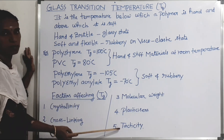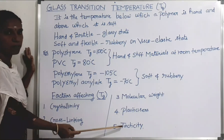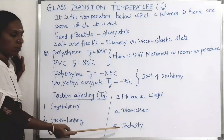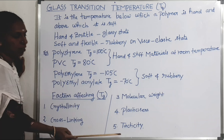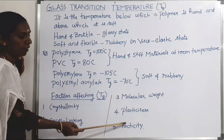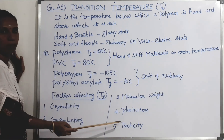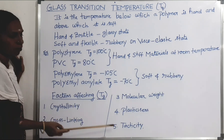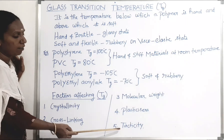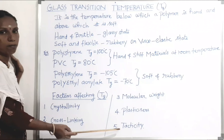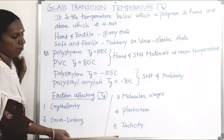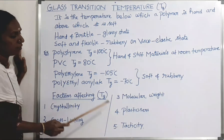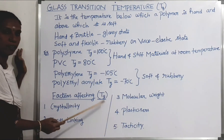The fifth factor is tacticity — the arrangement of functional groups of monomers in the polymer chain, which can be random, regular, or alternating. There are three types: isotactic, syndiotactic, and atactic polymers. In isotactic polymers, the chains are orderly arranged, so the Tg value increases. In syndiotactic polymers, the chains are alternatively arranged, so the Tg value decreases. In atactic polymers, the chains are randomly arranged, so the Tg value also decreases.